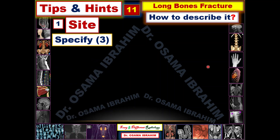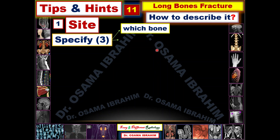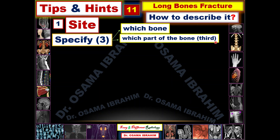The first one is the site, and you should specify three items when you detect the site. Specify which bone is involved — radial bone, femur, humerus, and so on. Then specify which part of the bone, dividing the bone into three parts: the proximal, the middle, or the distal third, or the junction between the proximal and middle, or the junction between middle and distal third.